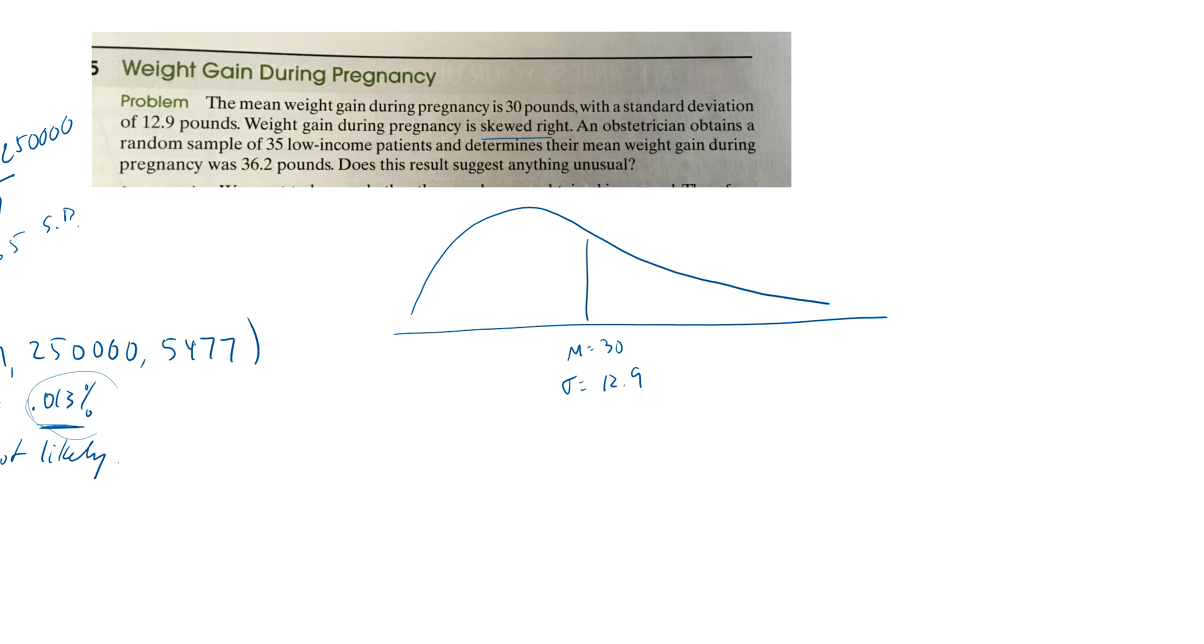So we're saying the weight gain during pregnancy is 30. The mean weight, and it's skewed to the right. So here's the average. Mu is 30. Standard deviation is 12.9. So most of the women are a little bit less than 30. Some are really far out there. So weight gain is skewed to the right. An obstetrician obtains a random sample of 35 low-income patients. So N is 35. And determines their mean weight, that's X bar, is 36.2 pounds. Are you surprised? So that's the question, surprised or not.